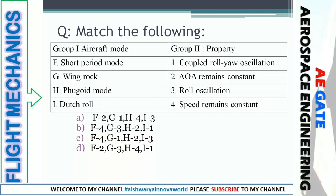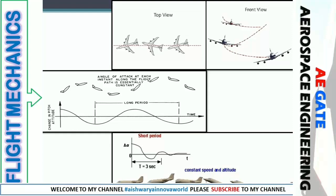Next: match modes and properties. Group 1 has short period mode, wing rock, phugoid mode, and Dutch roll. The properties are: coupled roll-yaw oscillation, angle of attack remains constant, and speed remains constant. Dutch roll is a coupling of rolling and yawing moment — it is a combination of roll and yaw oscillation.